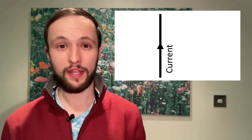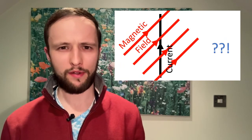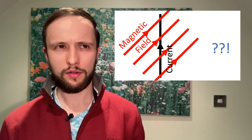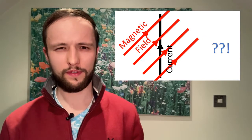If the current direction and magnetic field direction are somewhere in between parallel and 90 degrees to each other, we get kind of a bit of a force. We'll deal with that in another video.